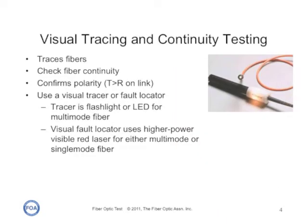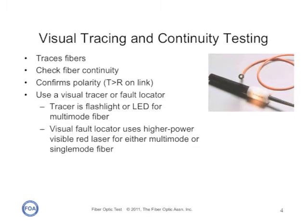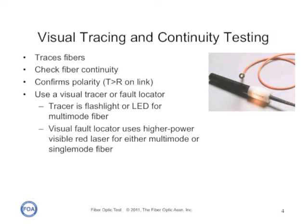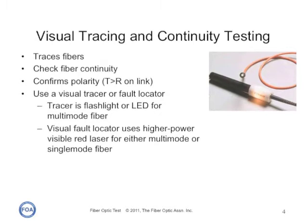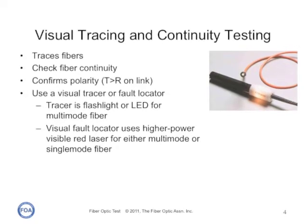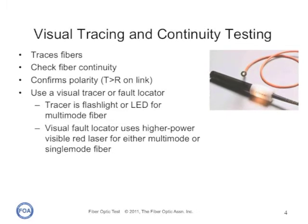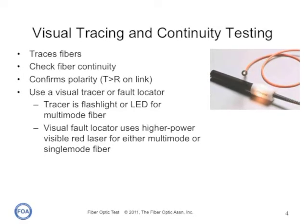One gadget everybody who works with fiber should have is a visual tracer. Some of them use flashlights like this one, some use LEDs, some use visible lasers. They're used to check fiber continuity and confirm polarity — that means that the fiber link connects a transmitter to a receiver. Polarity is often the first problem that people encounter when they're trying to connect fiber optic systems.